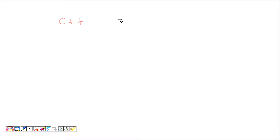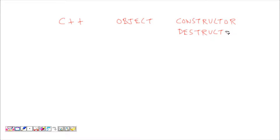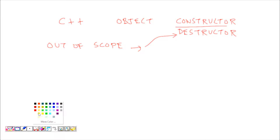In C++, objects are created from classes which have a constructor and a destructor. When the object is created, its constructor is called, and when it goes out of scope, its destructor is automatically called.